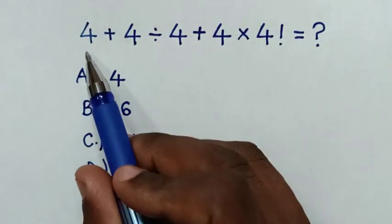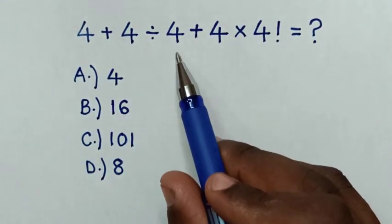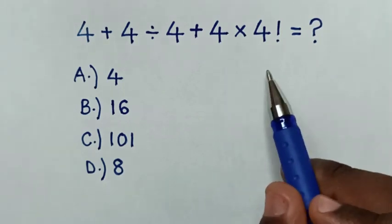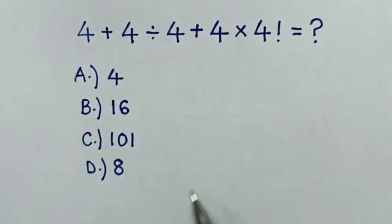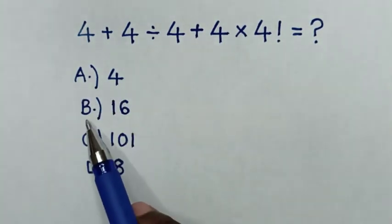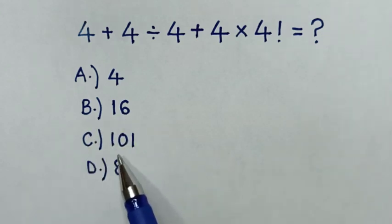Hello! How to solve 4 plus 4 divided by 4 plus 4 times 4 factorial? Select between the answers: A, 4, B, 16, C, 101, D, 8.